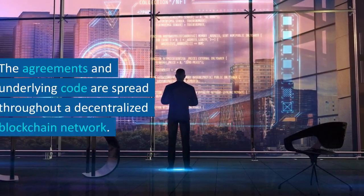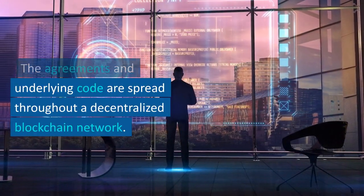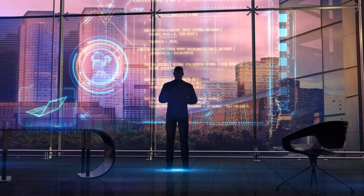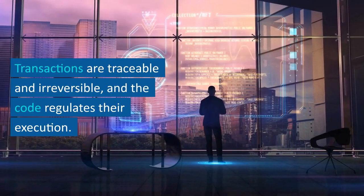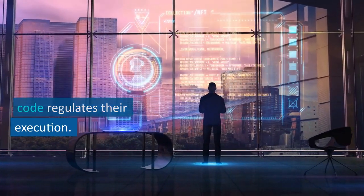The agreements and underlying code are spread throughout a decentralized blockchain network. Transactions are traceable and irreversible, and the code regulates their execution.